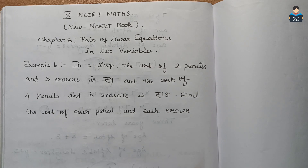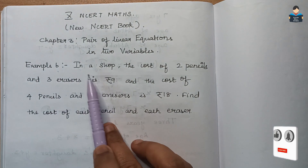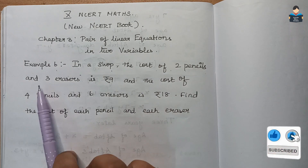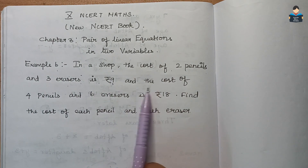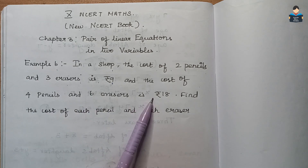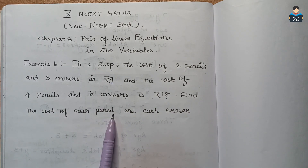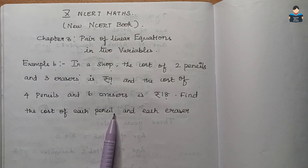Look at Example 6. In a shop, the cost of 2 pencils and 3 erasers is Rs.9, and the cost of 4 pencils and 6 erasers is Rs.18. Find the cost of each pencil and each eraser. We will find the value of one pencil and one eraser.